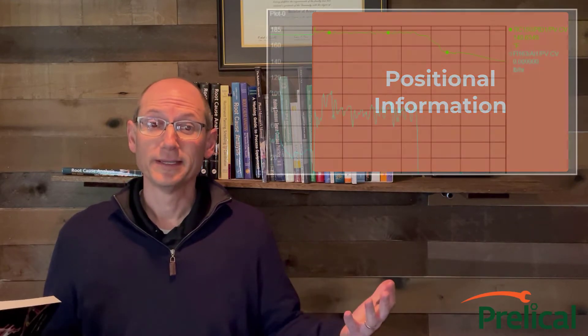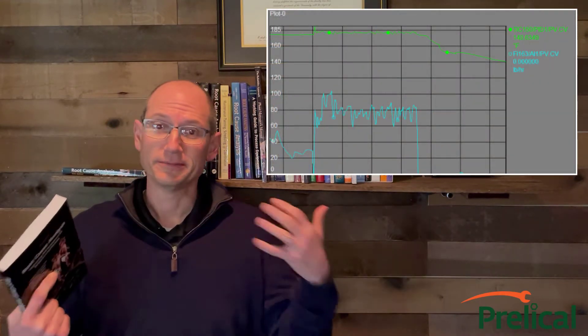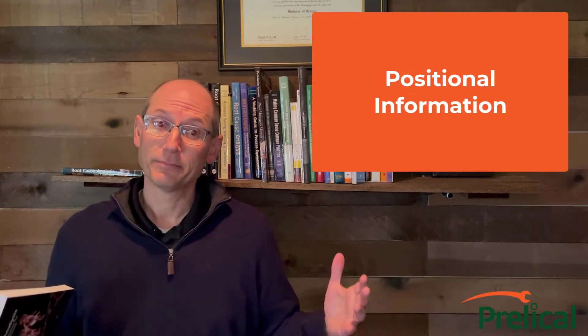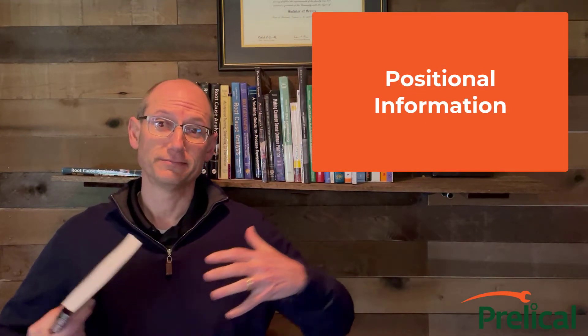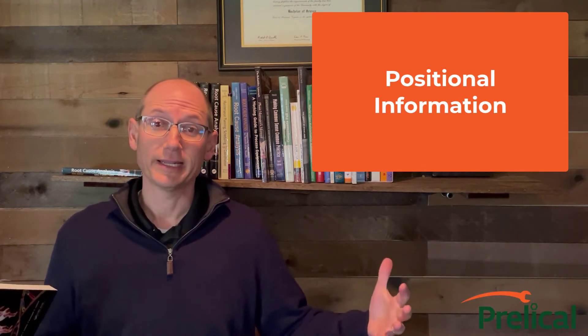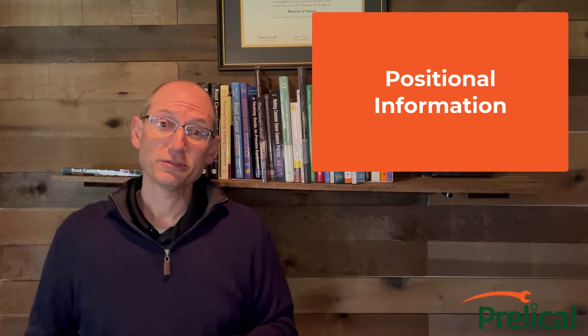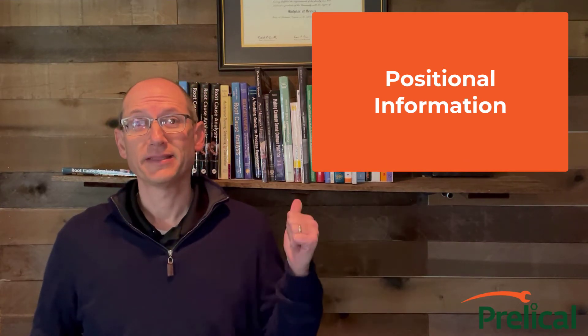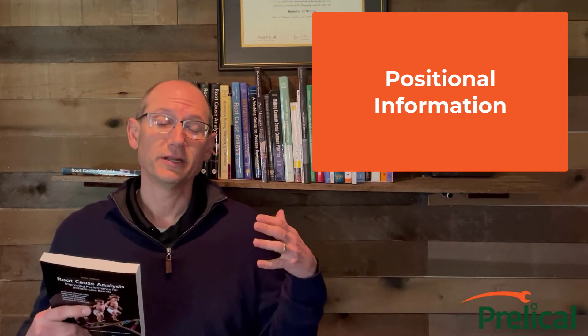Position — a lot of times we can get that from trends, maybe from your historian: temperatures, pressures, all that kind of stuff. Generally we can get that pretty well because the historian keeps years and years of that kind of information, so it's not too fragile. But positional information could be other things too — like do we see this problem in the evening, or does it seem to have more effect in the summer versus the winter? Maybe it's temperature related.